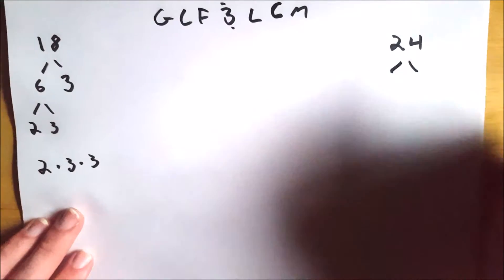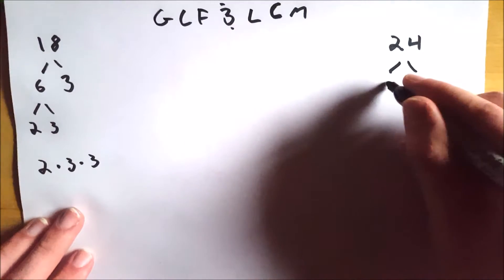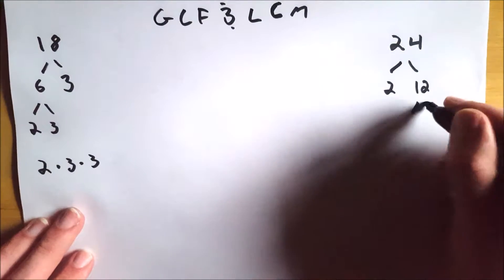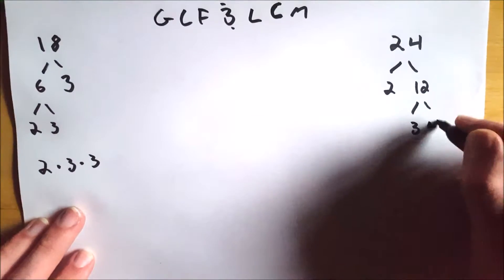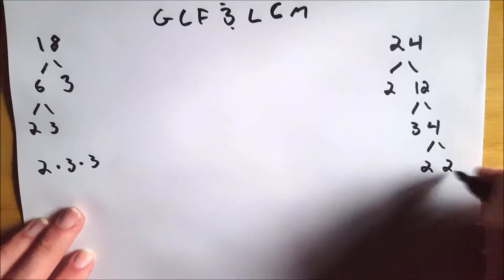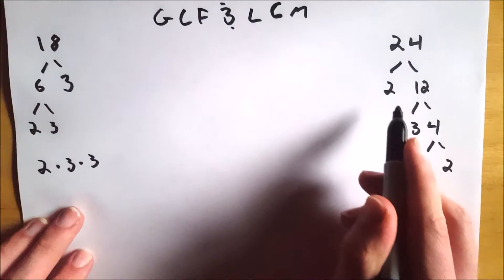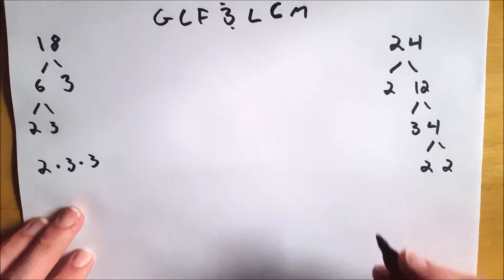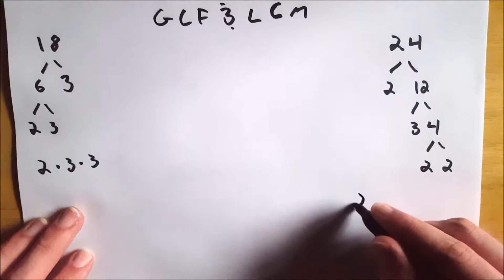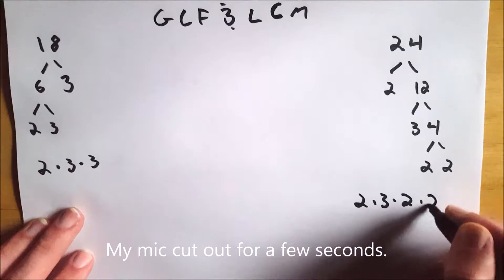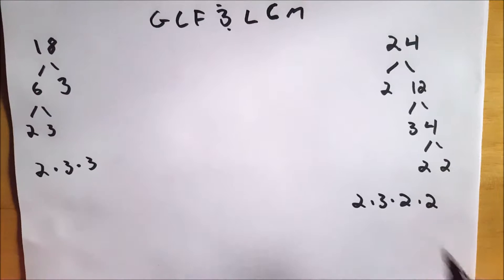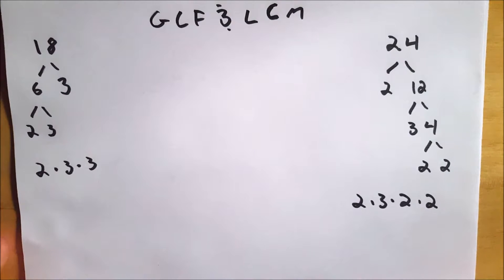And then 24, we can break that down into 2 times 12. 12 can be broken down into 3 times 4, and 4 can be broken down into 2 times 2. And then you just take the dead ends of all the branches of this factor tree, so to speak. And that gives us 2 times 3 times 2 times 2 equals 24. You could rewrite it in order 2 times 2 times 2 times 3, but I'm just going to leave it as is for now.